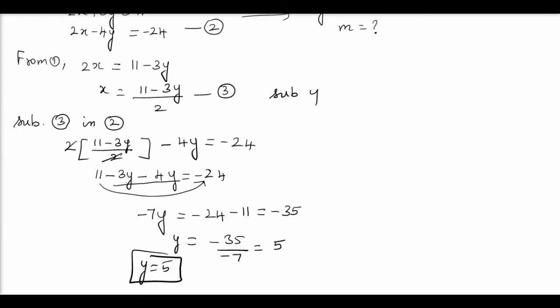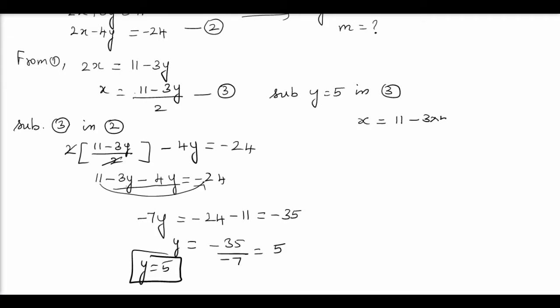Substitute y equals 5 in equation 3. So when you substitute in equation 3, you get x equals 11 minus 3 into 5 divided by 2. So x equals 11 minus 15 by 2. That's minus 4 by 2. That's equal minus 2. So we have got the value of x as minus 2. So the solution is x equals minus 2 and y equals 5.